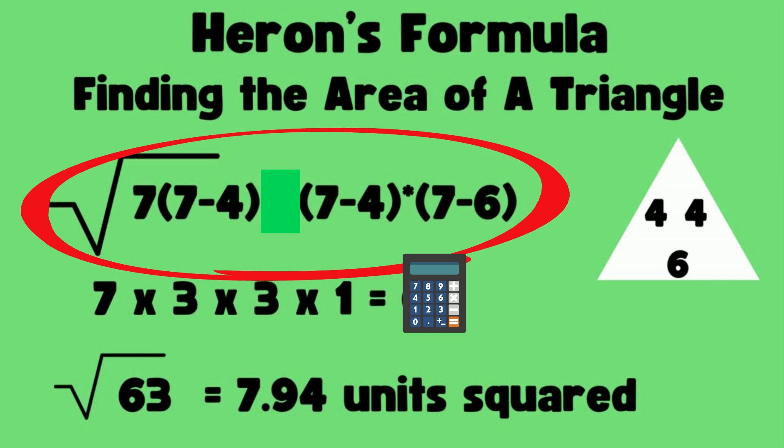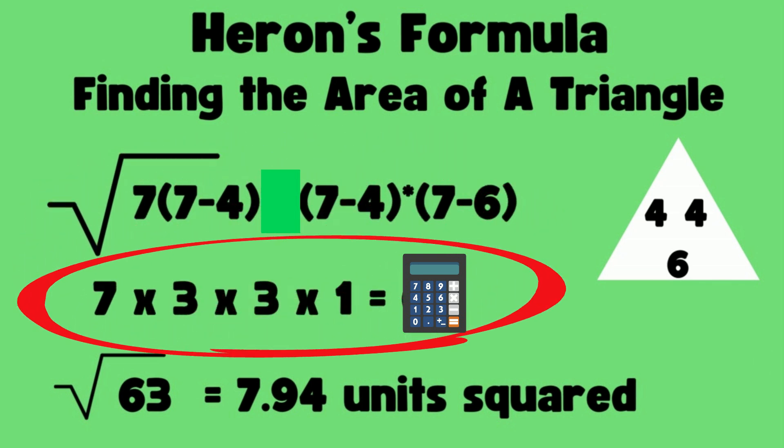Once I simplify that, I have 7 times 3 times 3 times 1. Let's multiply that together. I've got my calculator: 7 times 3 times 3 times 1, and that's 63.